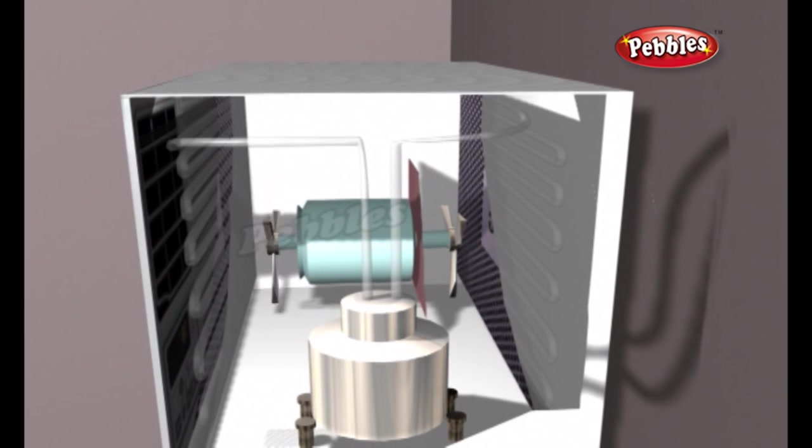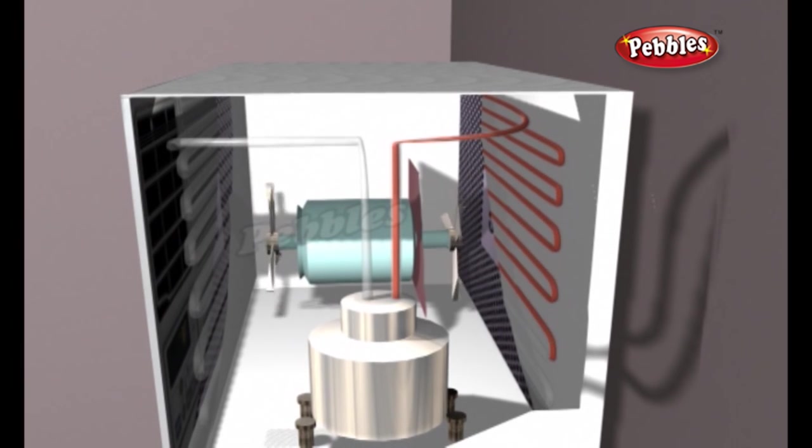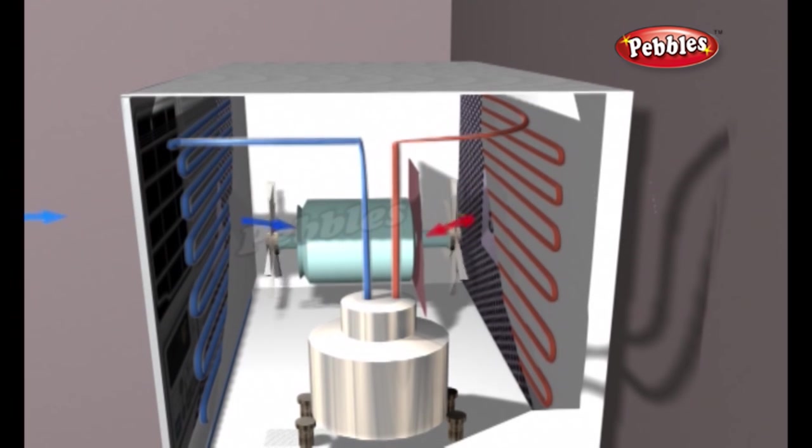As the air entering the unit reaches the set temperature, it will cause the compressor to turn off. When the room warms up, the thermostat senses the added heat and the compressor kicks back on to create more of the hot pressurized gas.